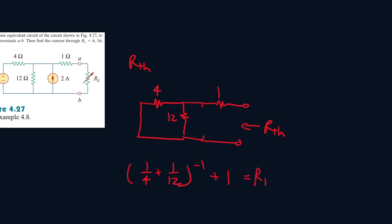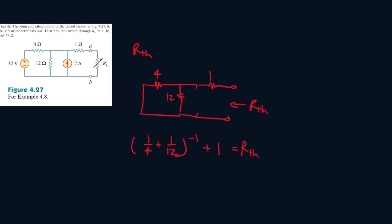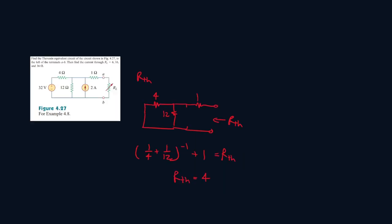And this will be RTH. So 1 over 4 plus 1 over 12 to the power of negative 1 plus 1. So RTH is equal to 4. So that's our first one done.